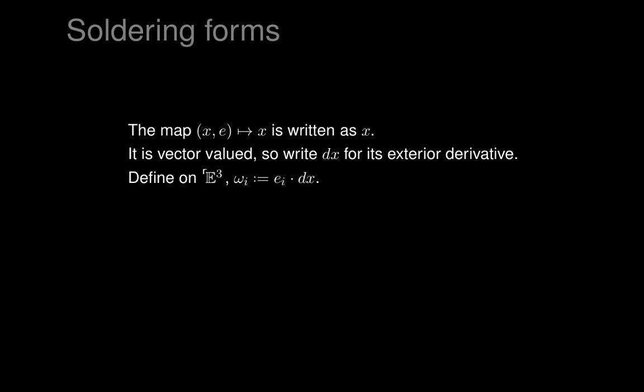We define scalar-valued one-forms on the six-dimensional frame bundle as omega_i = e_i · dx. These are defined on the frame bundle and not on ordinary three-dimensional Euclidean space, because on Euclidean space we only have a choice of point x — we don't have a choice of vectors E1, E2, E3. The vectors E1, E2, E3 are elements of a frame, and we have to pick a frame to get them. So the omega_i's are defined on the frame bundle but not on Euclidean space.